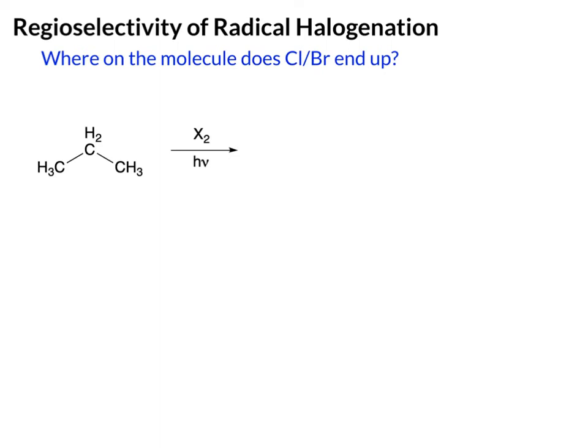We're now going to look at the regioselectivity of the radical halogenation. When you hear the term regioselectivity for a reaction, that's basically saying the reaction is taking place and what region of the molecule does the new group add to. So in this case, we're adding a chlorine or bromine, and we're trying to figure out where in this molecule does the new halogen end up. Let's keep it generic to start, using X2, meaning it could be either halogen.